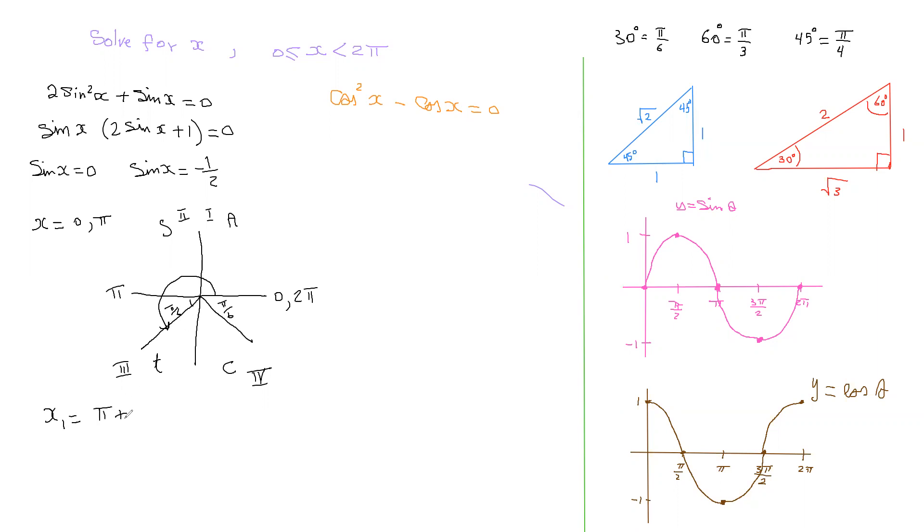So it'd be pi plus pi over six, which is the same as six pi over six plus pi over six. That will give you seven pi over six. So here's an answer. And then x2, you're measuring the angle from zero as always, and you're going all the way through here.